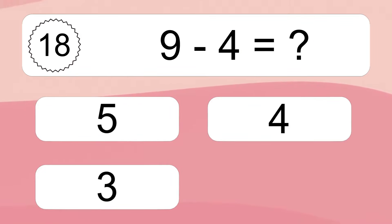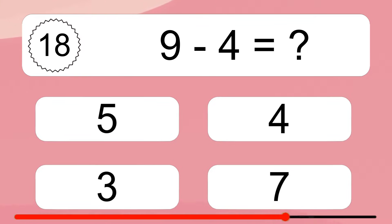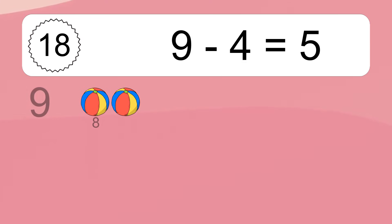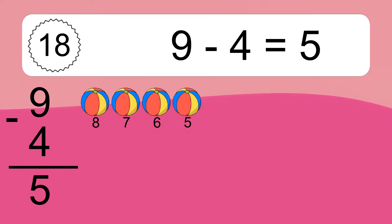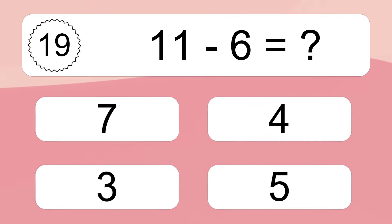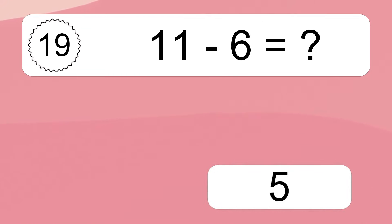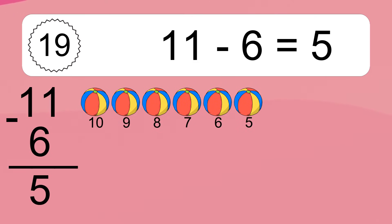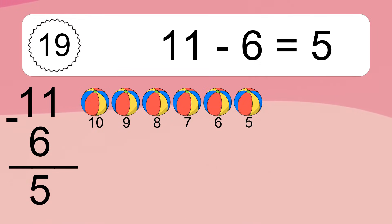9 minus 4 equals what? 9 minus 4 equals 5. Let's count it: 10, 9, 8, 7, 6, 5, 4.